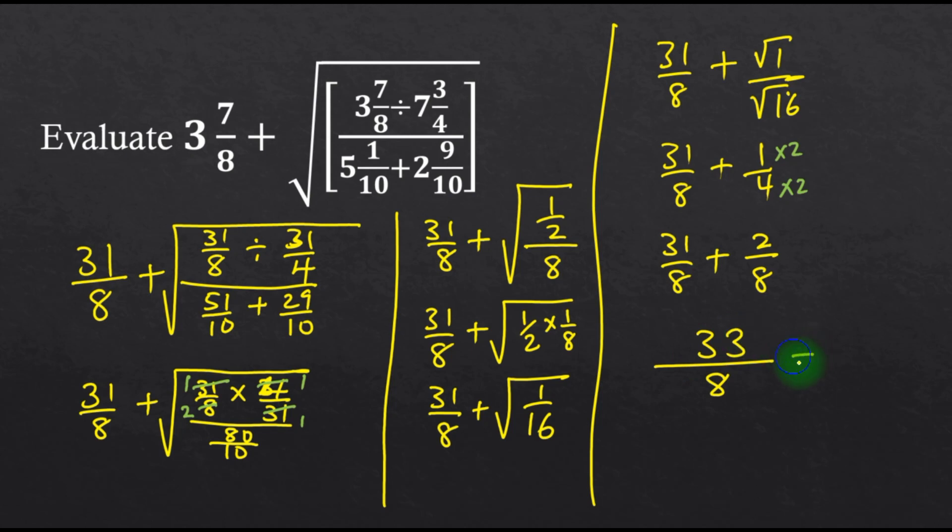Which will be the same as 8 goes into 33 four times, because 8 times 4 is 32, remainder 1 over 8. So the answer is 4 1/8.